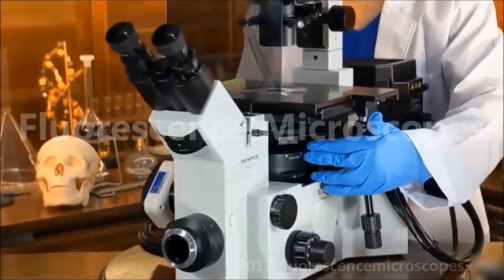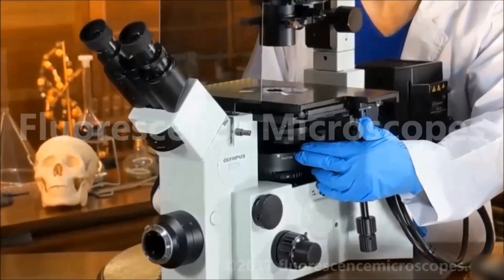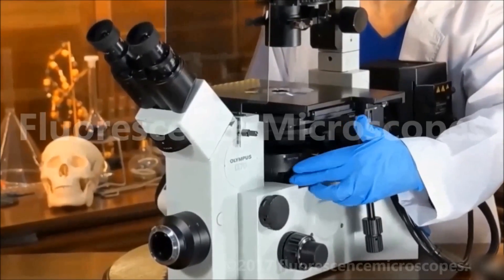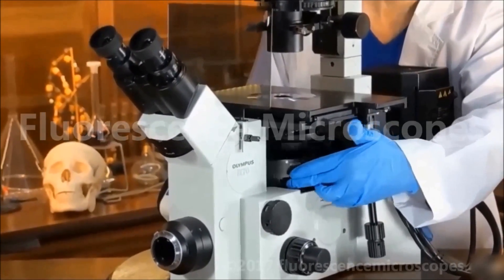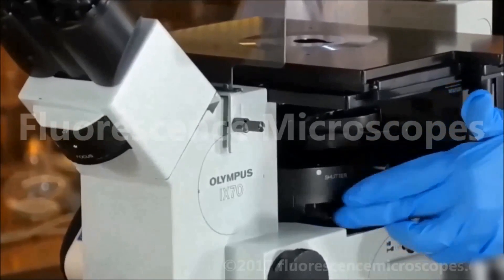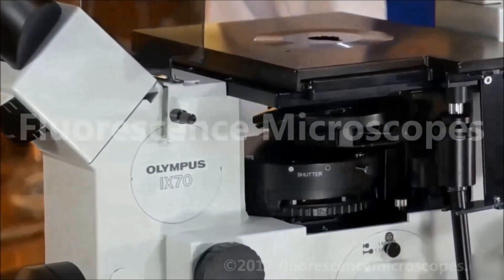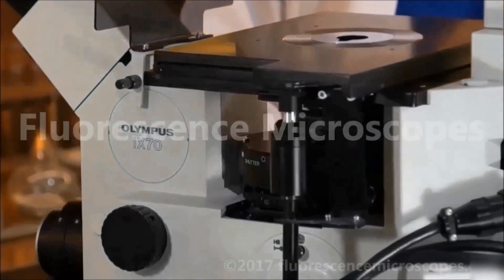This is the reflector turret. It has the dichroic filter cubes. This is the knob for turning and changing the cubes. Making your selection of which cube that you want.